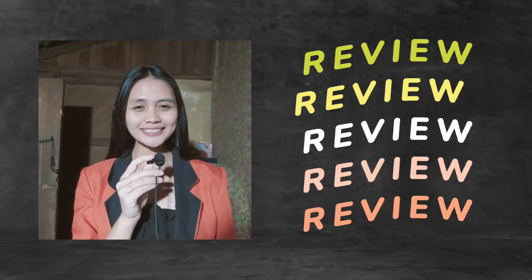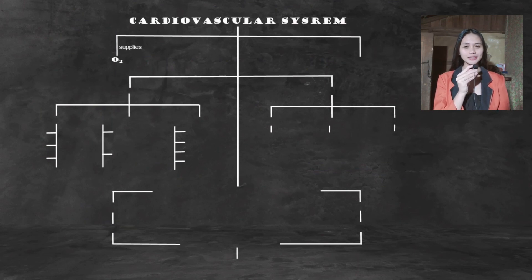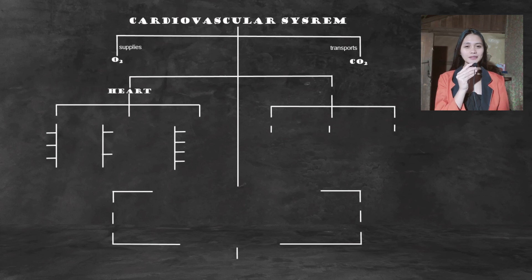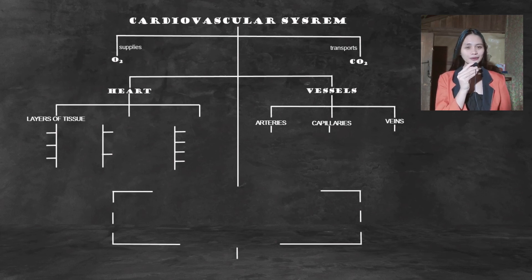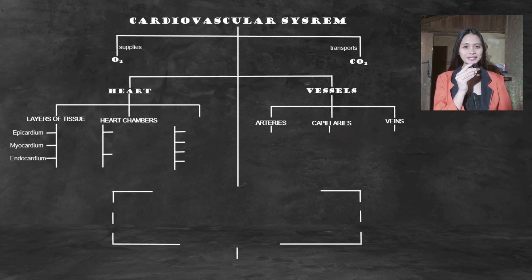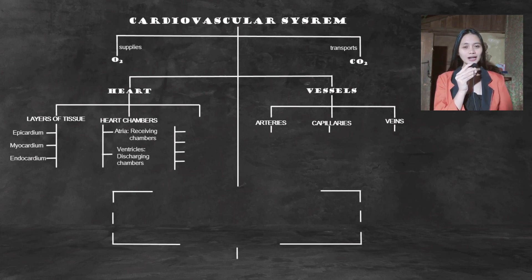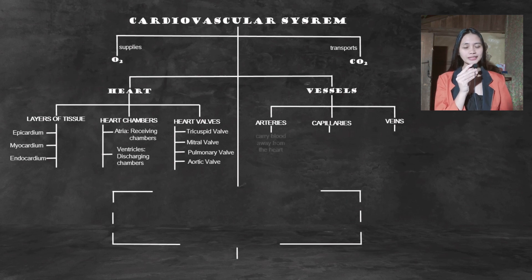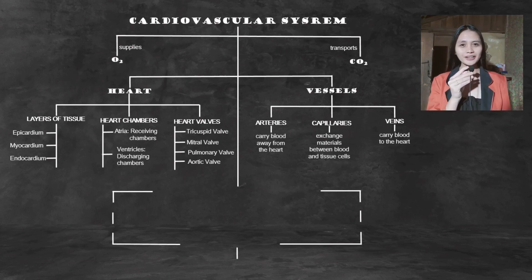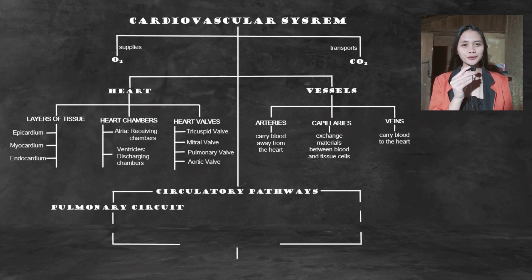Let's review what we discussed today. The cardiovascular system supplies oxygen from the lungs to the tissues of the body and transports carbon dioxide from the body to the lungs. It consists of the heart and blood vessels: arteries, capillaries, and veins. The heart is made up of three layers: the outer epicardium, the middle myocardium, and the inner endocardium. The heart has four chambers — the two upper chambers are the left and right atria (receiving chambers) and the two lower chambers are the ventricles (discharging chambers). The heart has four valves: the tricuspid valve, mitral valve, pulmonary valve, and aortic valve. Blood flows from arteries into capillaries and then into veins.